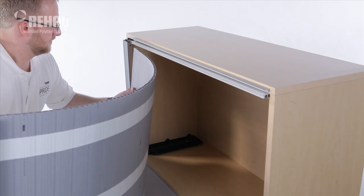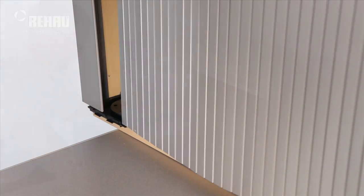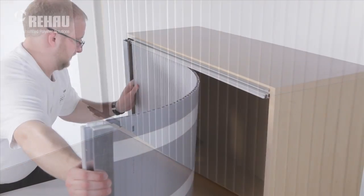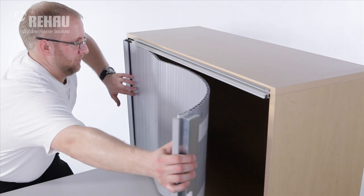Take the tambour carpet and carefully feed it into the top track and corresponding spiral tracks. Leave the door in the fully open position.